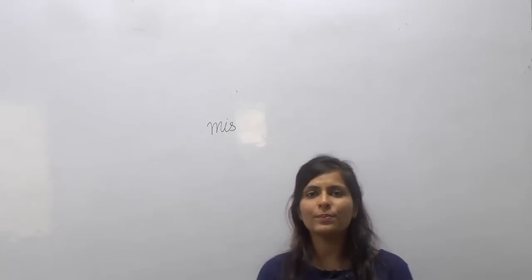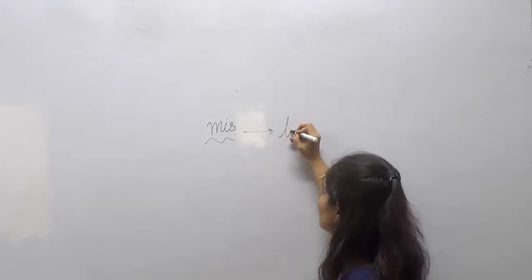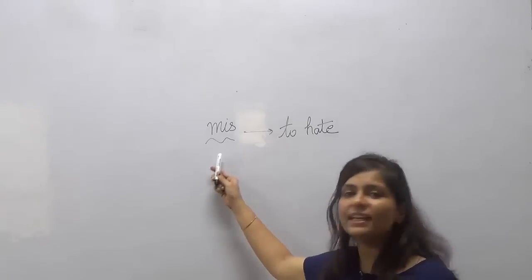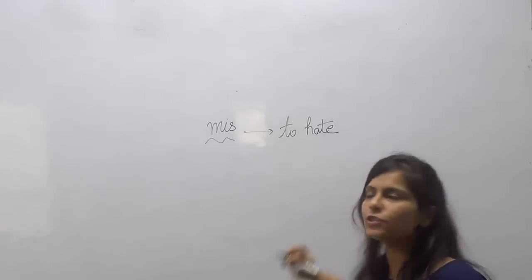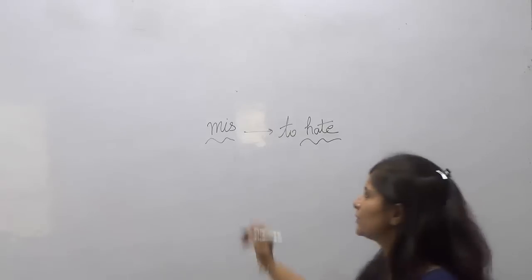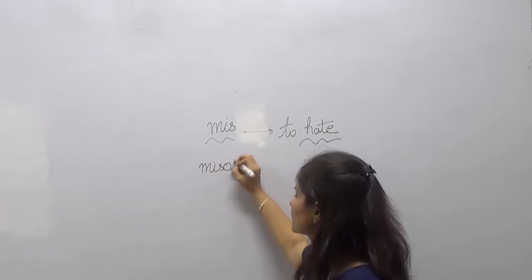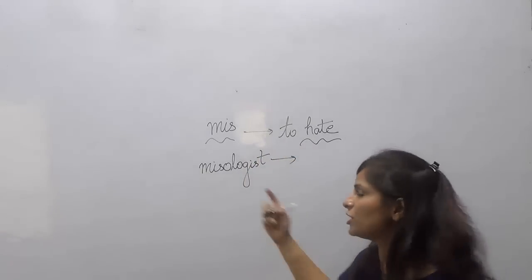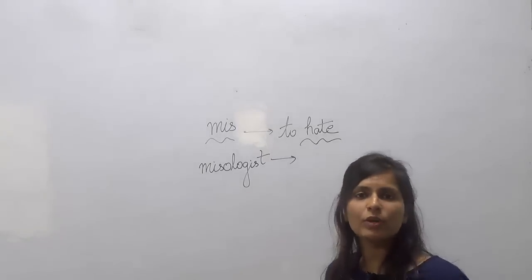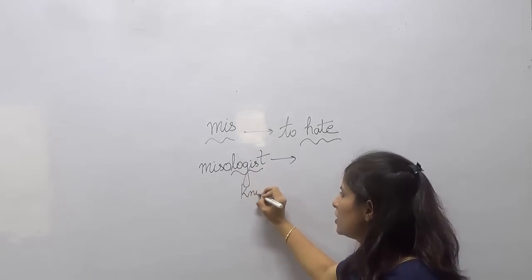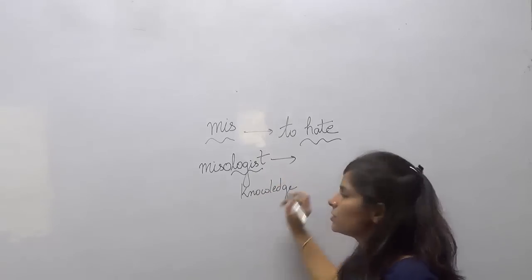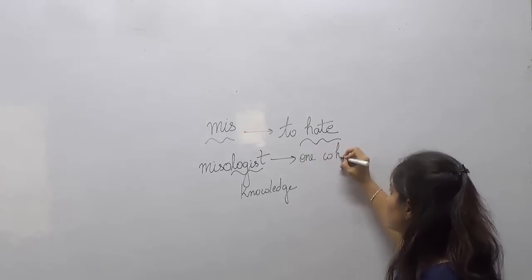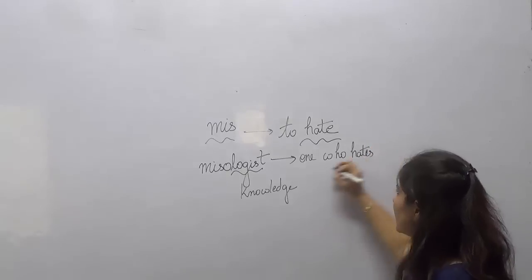The meaning of the root word 'mis' is to hate. So all those words which have 'mis' in them, their meaning would be related to the word hate. The first word is 'misologist'. The meaning of the word 'logos' is knowledge — as we have studied in sociology, biology. So the meaning of the word 'misologist' is one who hates knowledge.